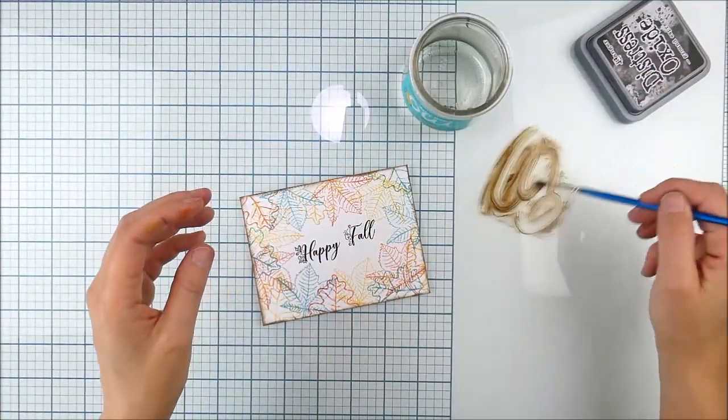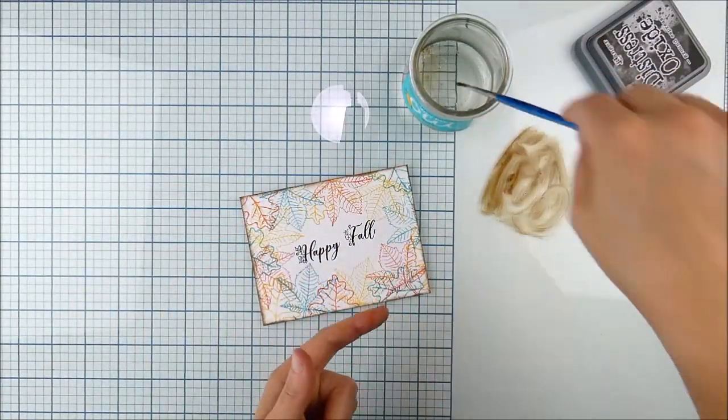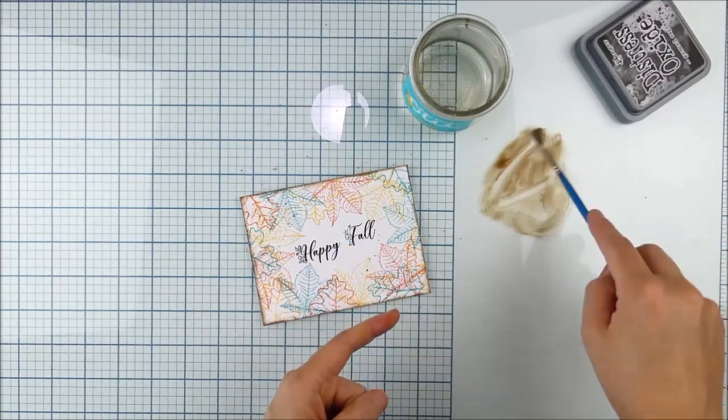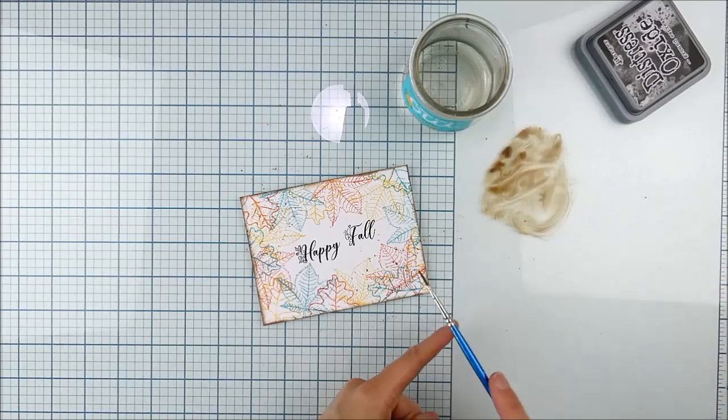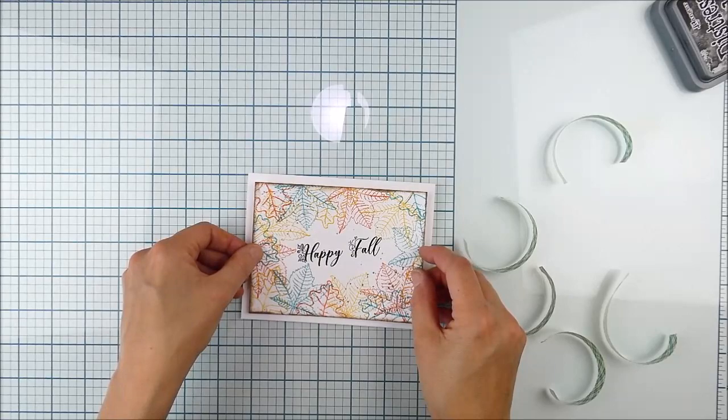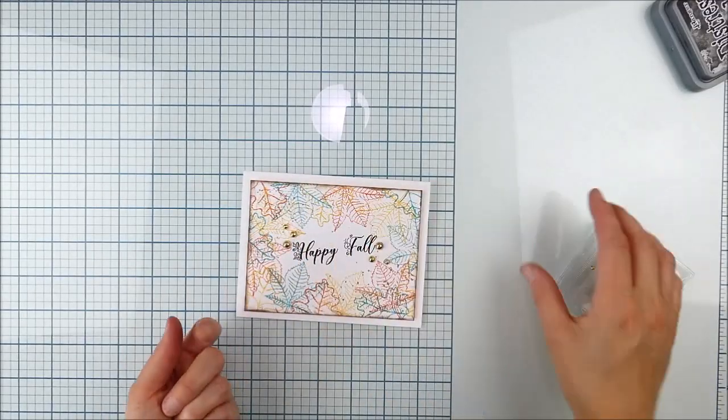So I just smooshed it onto my, I'm using a glass mat. If you don't have a glass mat, just use a clear block or a paint palette. And then I just put a little bit of water in there with a fine brush and use that to add some splatters. And I think that was exactly what it needed to kind of finish out that background and add a little texture.